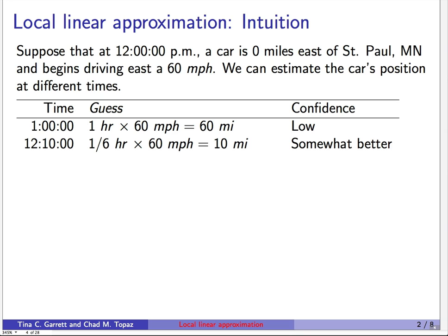What if instead we ask what's going on at 12:10 — that's 10 minutes after we started? Ten minutes is one sixth of an hour, so we estimate one sixth of an hour times 60 miles per hour is 10 miles. Our best guess is that the car is 10 miles east of St. Paul. Our confidence is somewhat better than the previous guess, but it's still not great because even in 10 minutes a lot could happen.